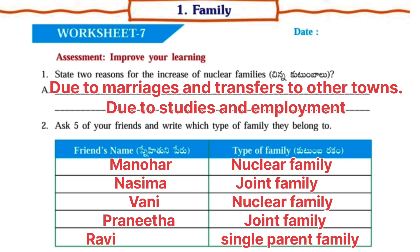Worksheet No. 7 — Assessment: Improve your learning. First one — State two reasons for the increase of nuclear families. Answer: Due to marriages and transfers to other towns. Due to studies and employment.